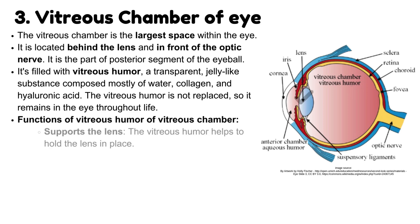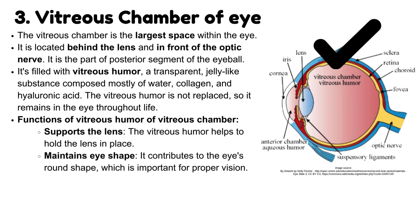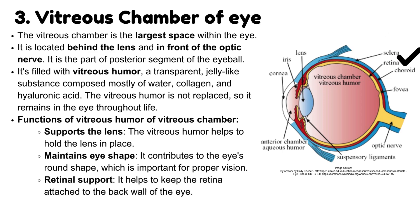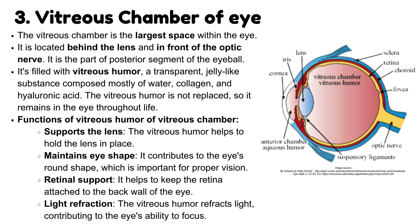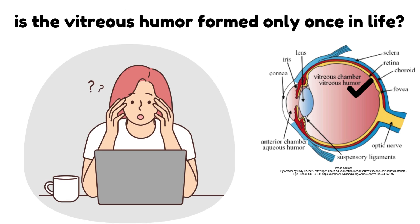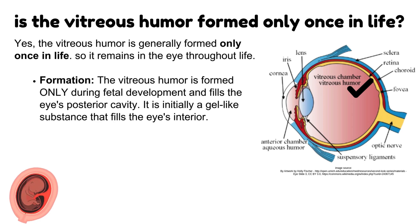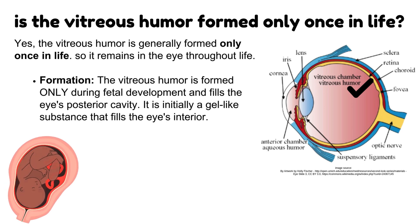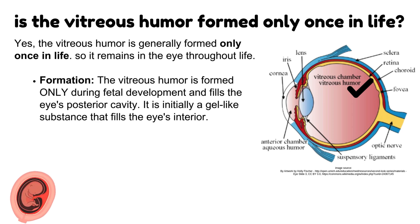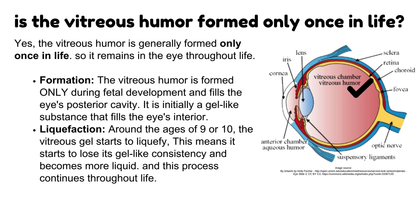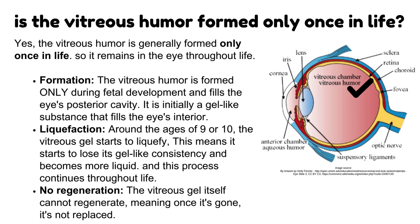Functions of vitreous humor: it helps to hold the lens in place, contributes to the eye's round shape which is important for proper vision, helps to keep the retina attached to the back wall of the eye, and refracts light, contributing to the eye's ability to focus. The vitreous humor is generally formed only once in life — during fetal development — filling the eye's posterior cavity as a gel-like substance. Around ages 9 or 10, the vitreous gel starts to liquefy, losing its gel-like consistency and becoming more liquid, a process that continues throughout life. The vitreous gel itself cannot regenerate, meaning once it's gone, it is not replaced.